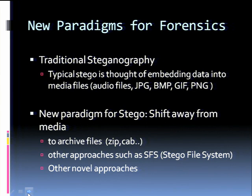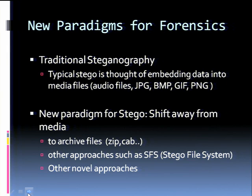New paradigms for forensics from an investigative perspective: traditional steganography is thought of as just embedding data in media files — audio, JPEG, bitmap, GIFs. But things get messy as you increase the payload. This session is really about a new paradigm in steganography — there will be a shift away from media files probably to more of the archive files: ZIP, CAB, 7-Zip, and others that the rest of the team is talking about.